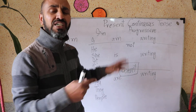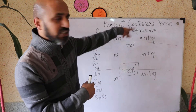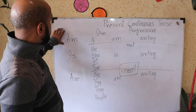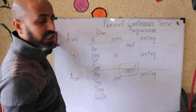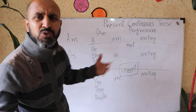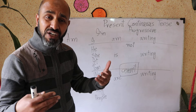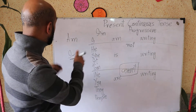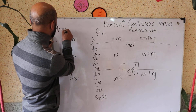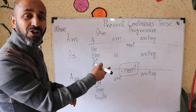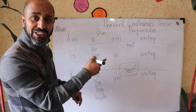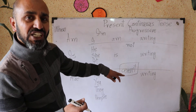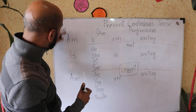Now let's move on to WH questions in present continuous tense. They are made in the same way as in present simple tense — you just place the WH question word at the beginning of the question. For example: What am I writing? When am I leaving? When am I calling you? When is he writing? What is he writing? Where is he writing — on the notebook or somewhere else? Where is he going? Where is Tom writing? When is he writing?